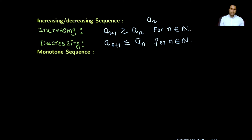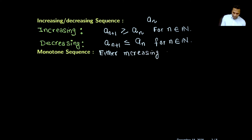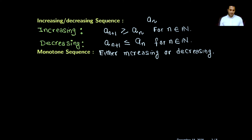Now, what is a monotone sequence? A sequence is said to be monotone if it is either an increasing sequence or a decreasing sequence. So if it is one of them, we will call that sequence a monotone sequence. Now I will show you a few examples of sequences which are increasing, decreasing, or not monotone.